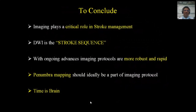To conclude, imaging plays a critical role in stroke management. Diffusion is the stroke sequence. With ongoing advances in imaging protocols, we will get imaging that is more robust and more rapid. Penumbra mapping, currently problematic, will get more refined with pH imaging and kurtosis imaging coming in the future. As radiologists, we must insist on getting these patients imaged as quickly as possible and never forget: time is brain. Thank you for your attention.